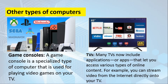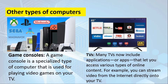The next type is the smart TV. Many TVs now include applications or apps that let you access various types of online content — for example, you can stream video from the internet directly onto your television. What a computer or laptop can do — watching videos, playing games, playing music — you can also do on your television, as long as your TV is capable of running these applications. Not all flat-screen TVs can download applications; only smart TVs can do this.